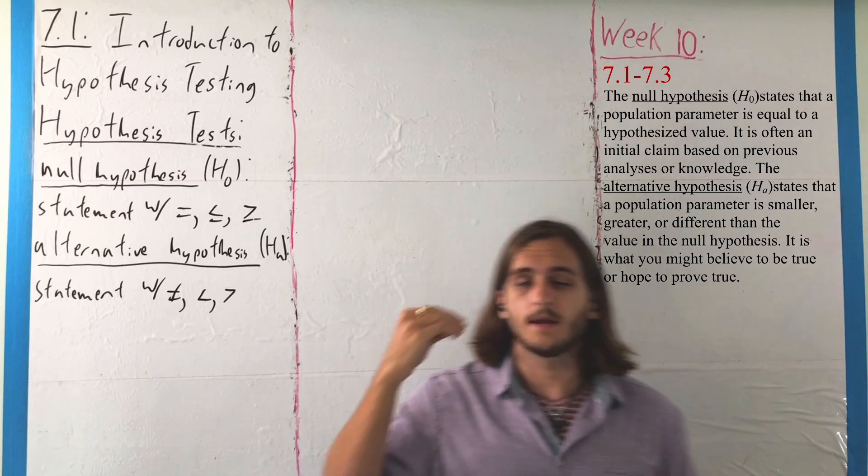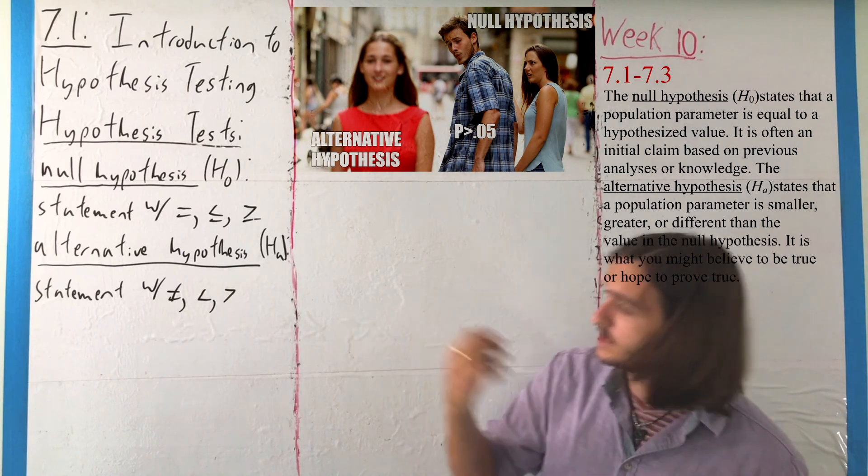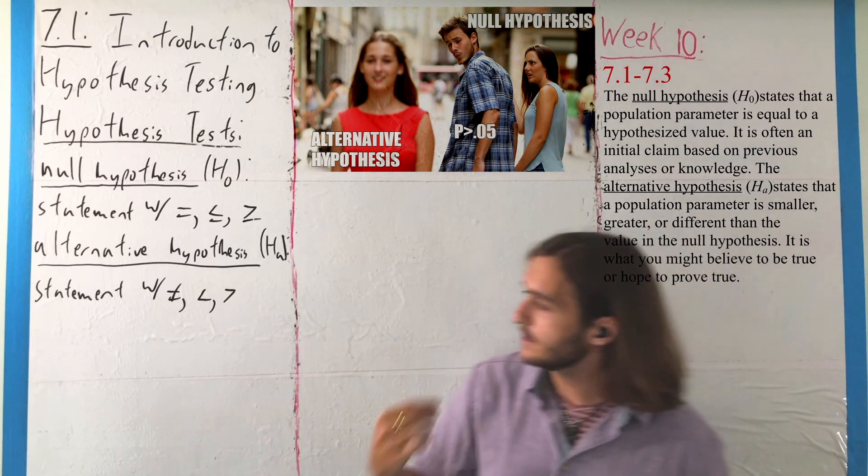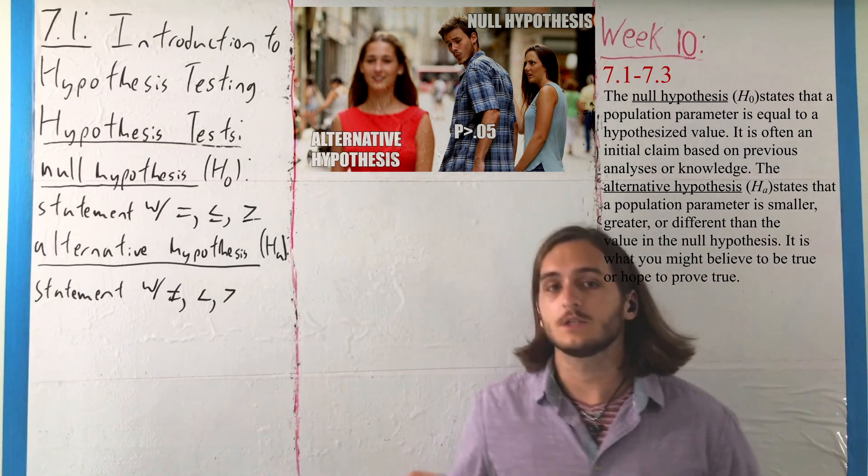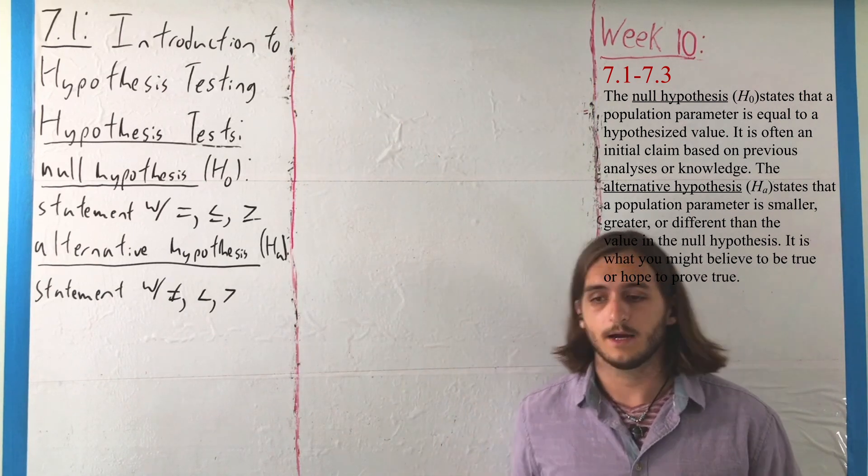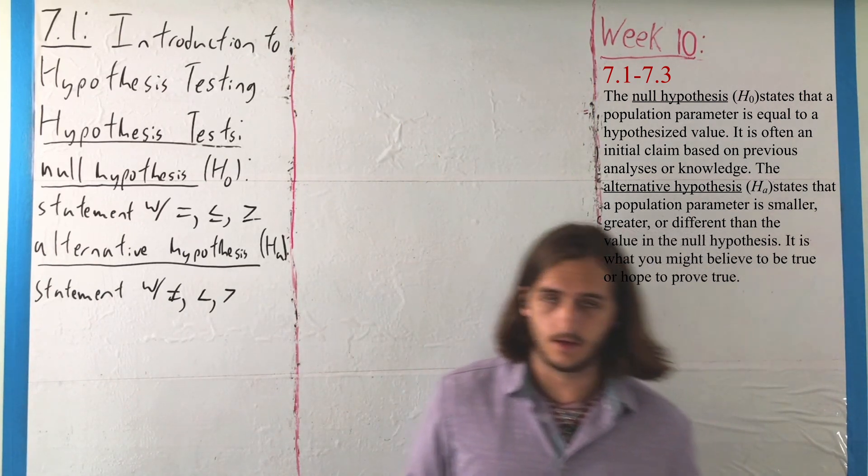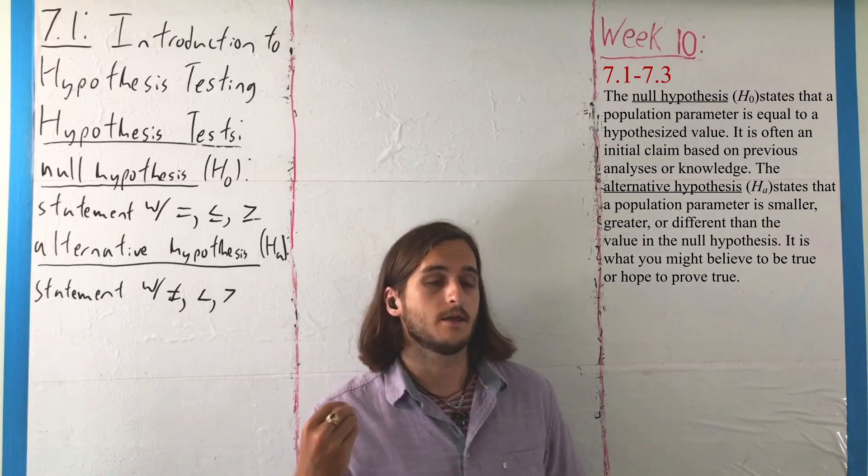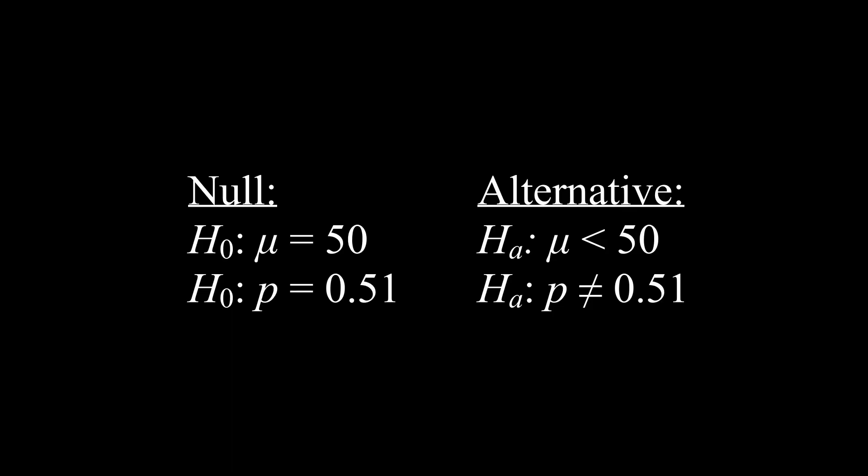We're going to be comparing it to the alternative hypothesis H sub A, which is our statement that includes some form of inequality, either not equal to, less than, or greater than. So this would be something like the idea that the average was smaller, or that the proportion had changed.